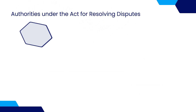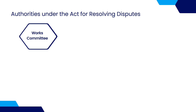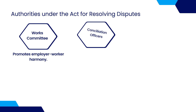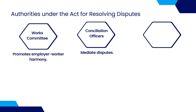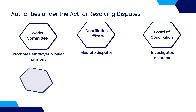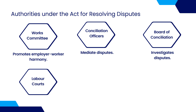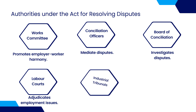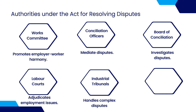To resolve industrial disputes, the act provides several authorities. The first is the Works Committee, set up in establishments with one hundred or more workers. It promotes better relationships between employers and employees by resolving day-to-day grievances. The second is Conciliation Officers, appointed by the government, who act as mediators to help the parties settle disputes amicably.